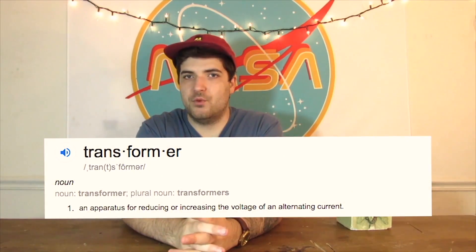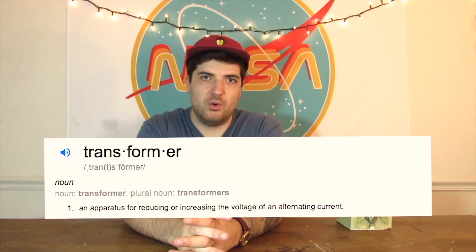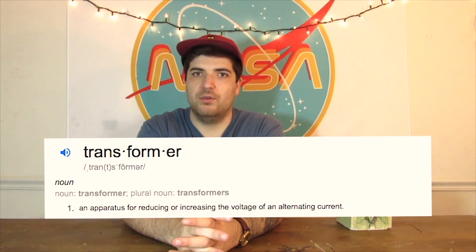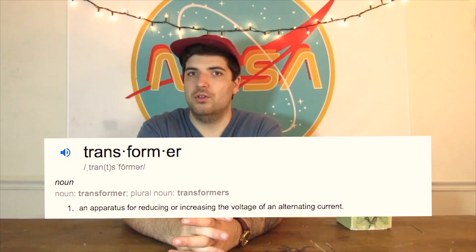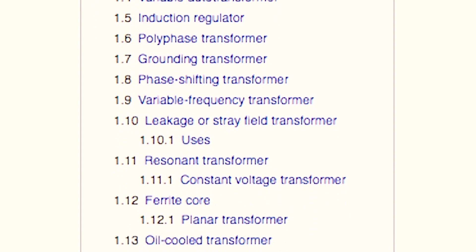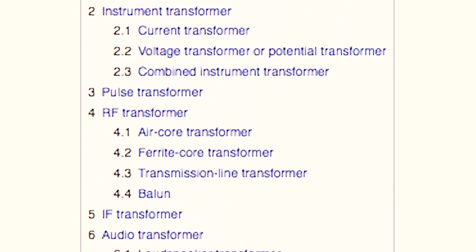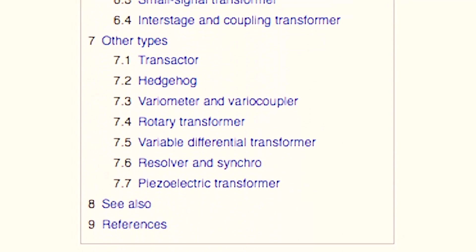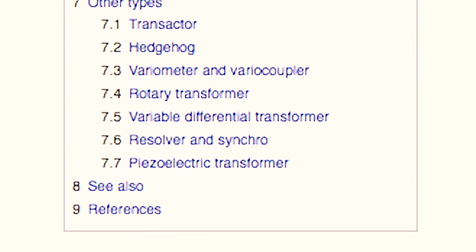So what is a transformer? It is defined as an apparatus for either increasing or decreasing the voltage of an alternating current. There are a lot of different types of transformers, from power transformers all the way down to piezoelectric transformers.